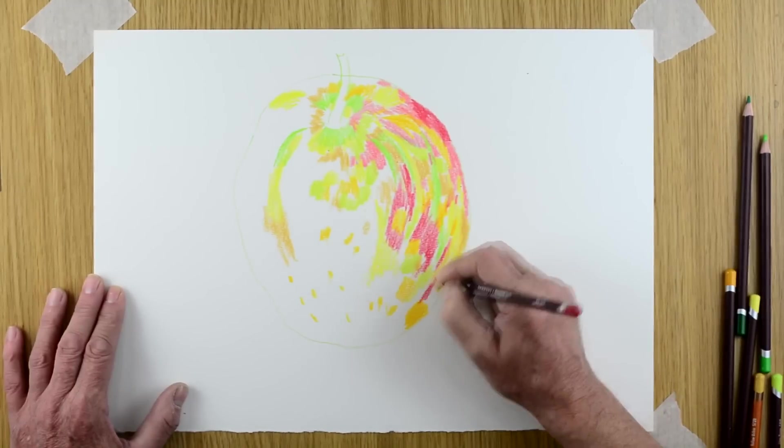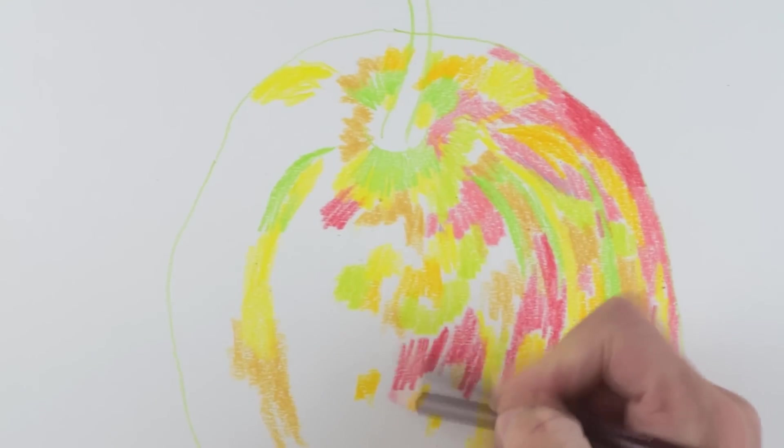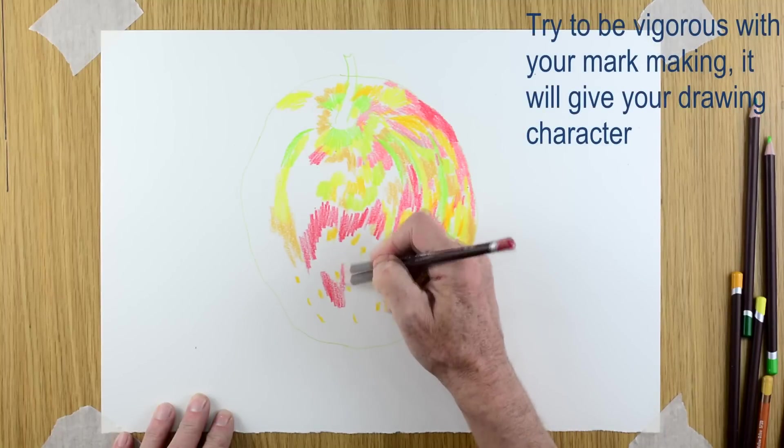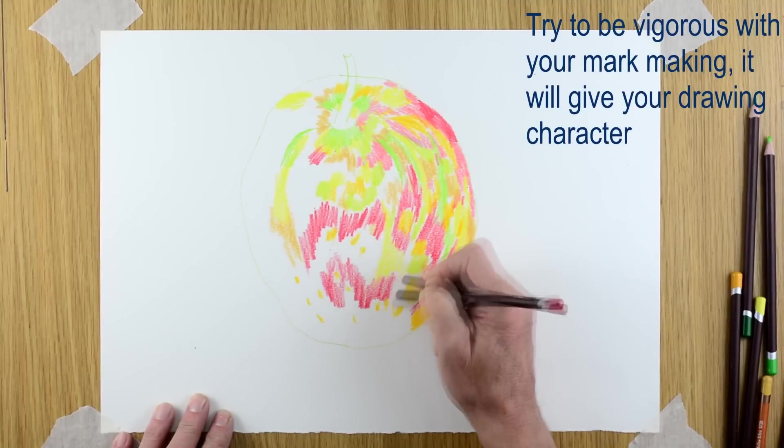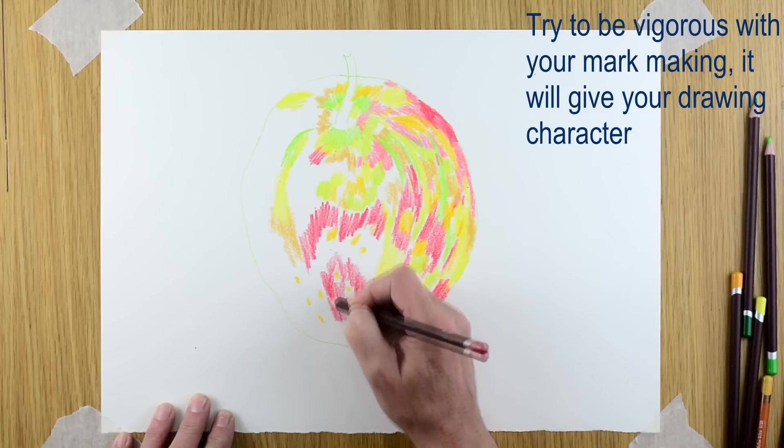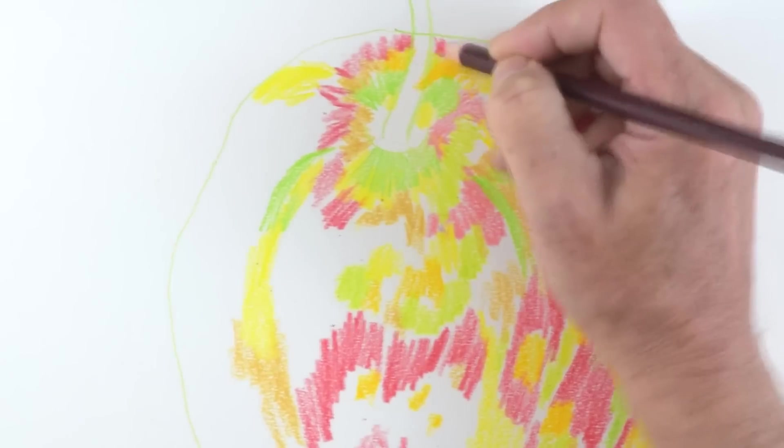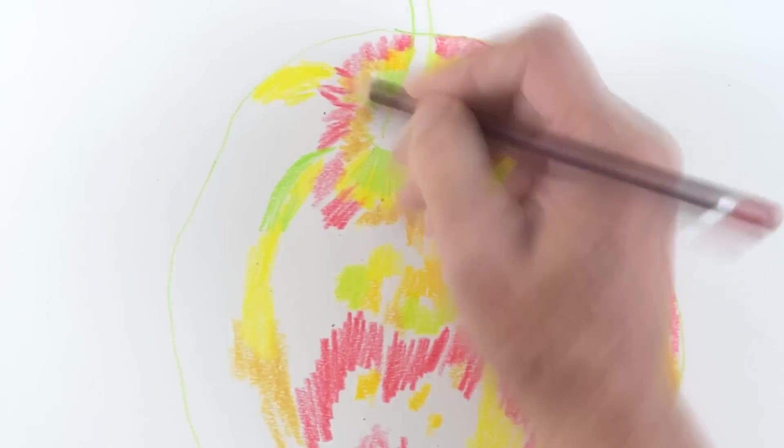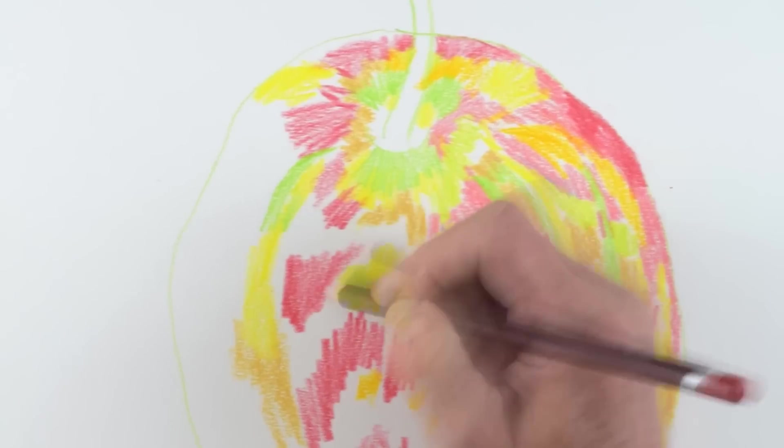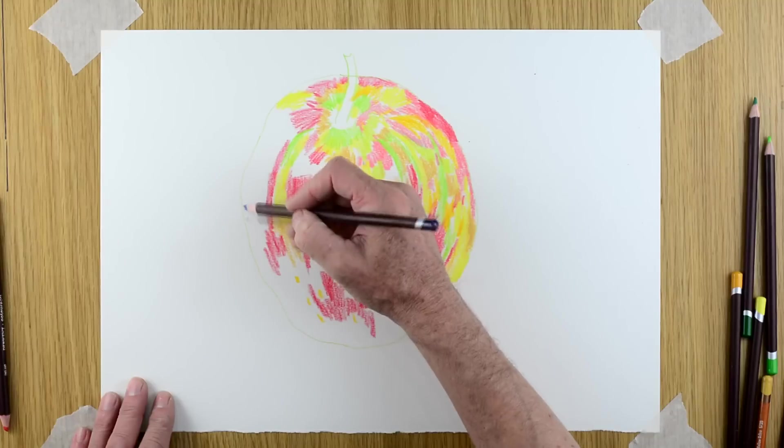Now make sure before you start your drawing that you've got your pencil very sharp and you've got plenty of lead on the pencil because you're going to be doing a lot of scribbling and a lot of shading, particularly if you're doing a drawing as large as this one is here. Now you can see gradually the reds now becoming darker and we're beginning to get some structure to the apple. The more structure you can suggest with the angle of the lines, the better your drawing will become.